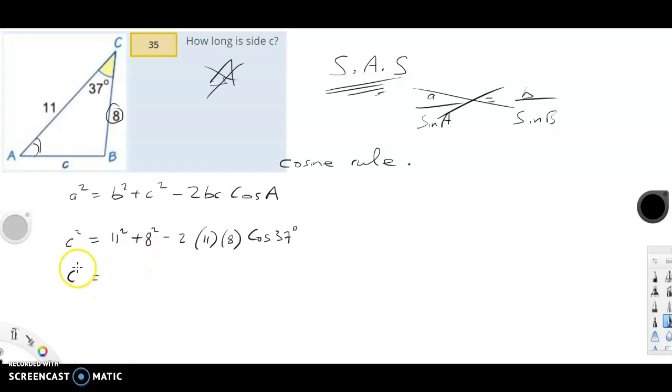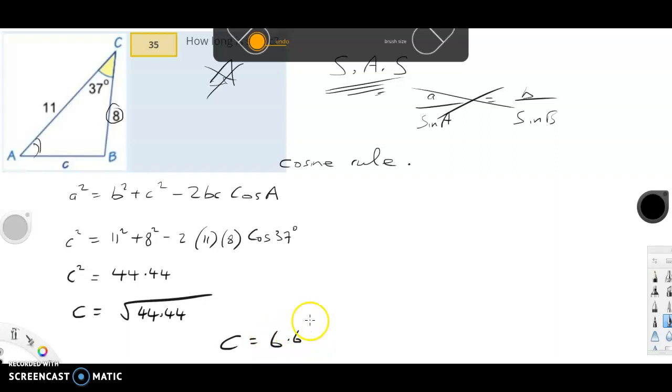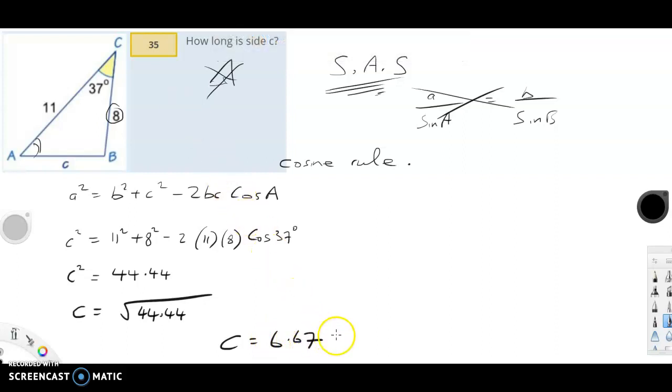I end up with c squared now equals 44.44 etc. To two decimal places, that's what I get for c squared. So c is going to be the square root of my last answer, 44.44. On the calculator I'm just going to go square root, use the last answer key, and I end up with c equals 6.666.